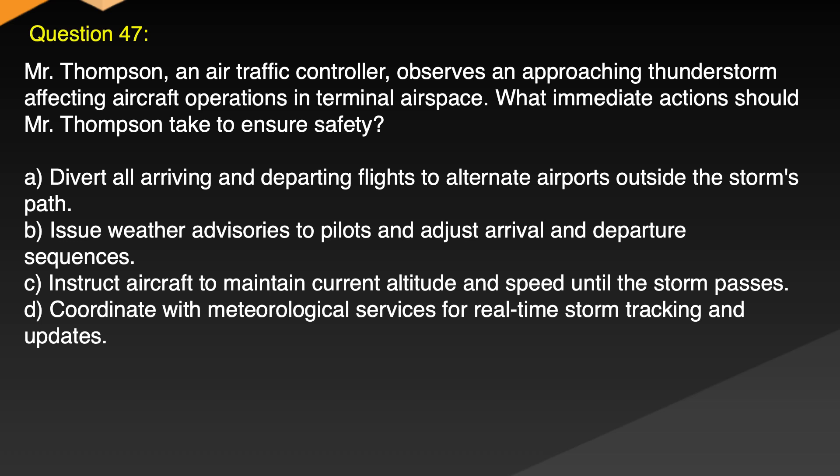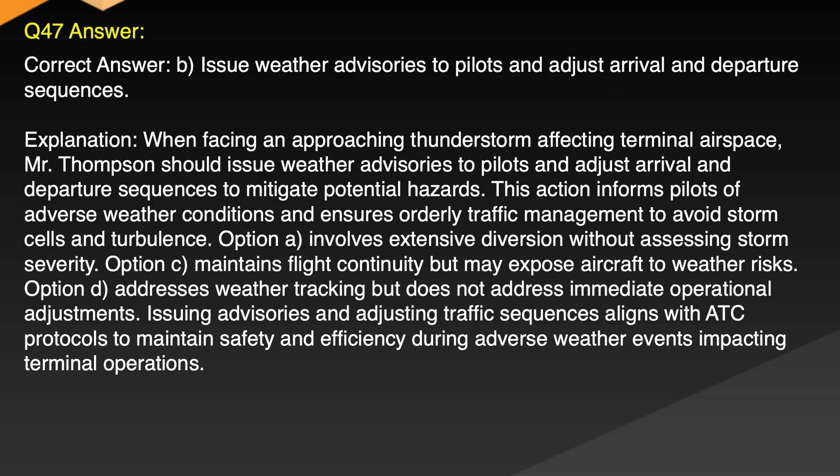Question 47. Mr. Thompson, an air traffic controller, observes an approaching thunderstorm affecting aircraft operations in terminal airspace. What immediate action should Mr. Thompson take to ensure safety? A. Divert arriving and departing flights to alternate airports outside the storm's path. B. Issue weather advisories to pilots and adjust arrival and departure sequences. C. Instruct aircraft to maintain current altitude and speed until the storm passes. D. Coordinate with meteorological services for real-time storm tracking and updates. Correct answer: B. Issue weather advisories to pilots and adjust arrival and departure sequences.